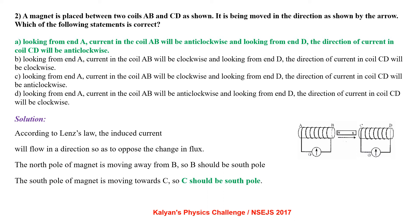According to Lenz's law, the induced current will flow in a direction so as to oppose the change in flux. The north pole of the magnet is moved away from B, so B should be the south pole. The south pole of the magnet is moving towards C, so C should be south pole.